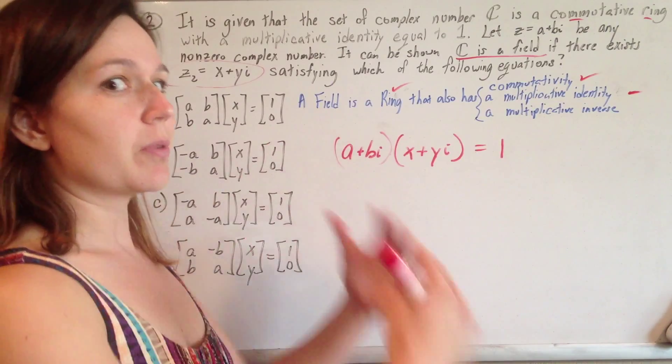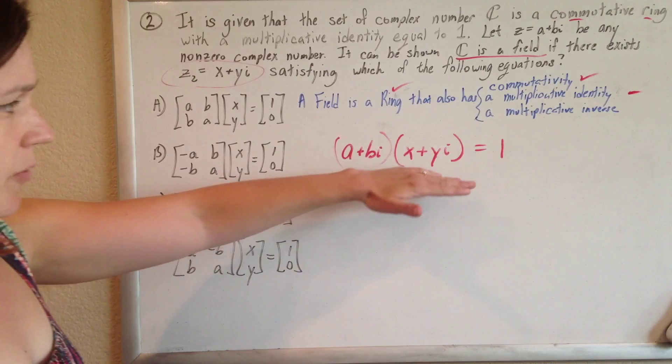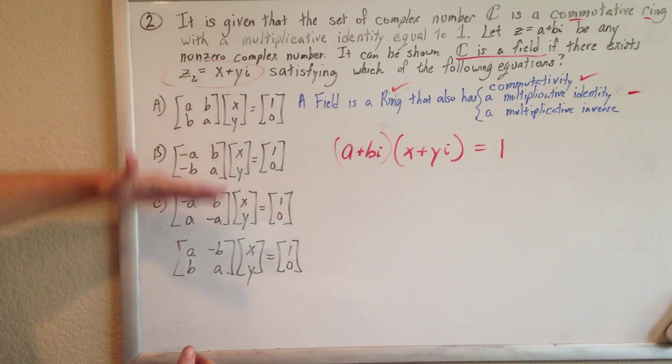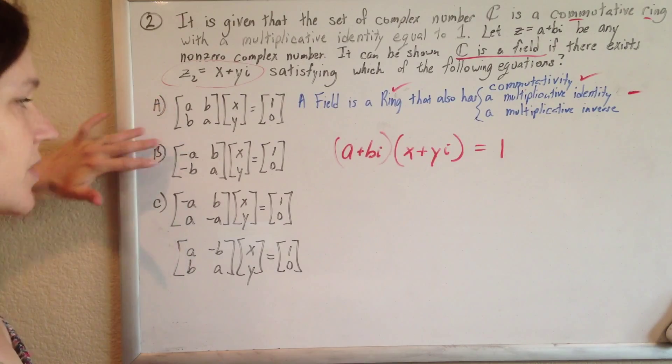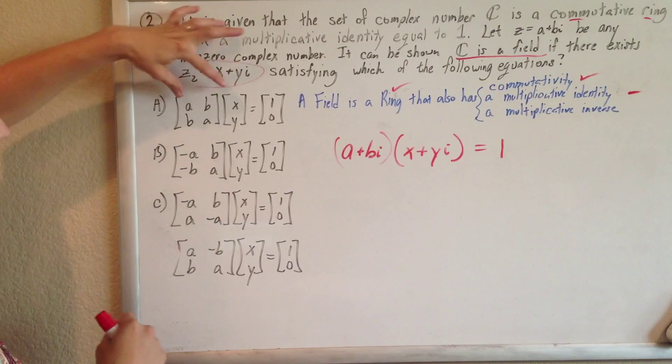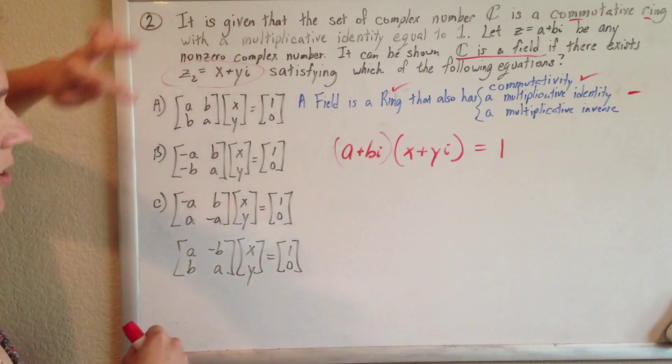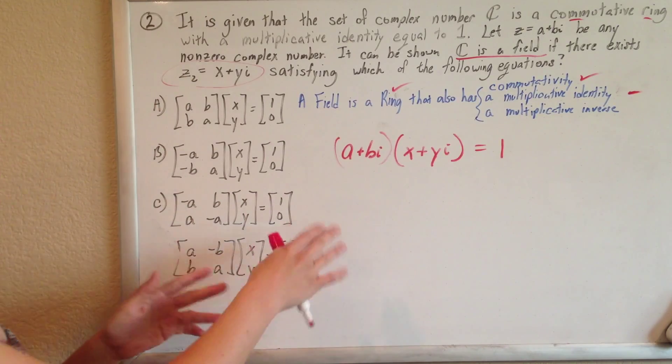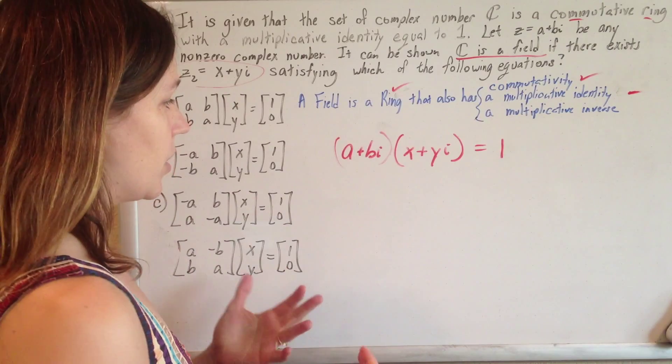So we got past the ring jargon, and somehow from this we're going to need to set up a matrix system of equations. So it's just two equations, two unknowns, set up scarily in a matrix format. But basically this is just like ax plus by equals 1 and bx plus ay equals 0. So if we can get two equations and two unknowns out of this thing, we're going to be golden.